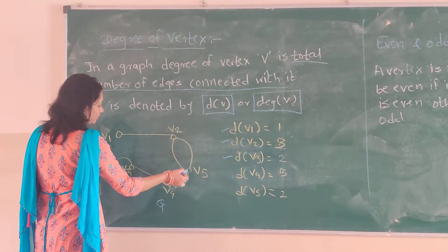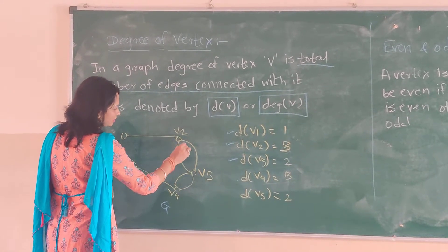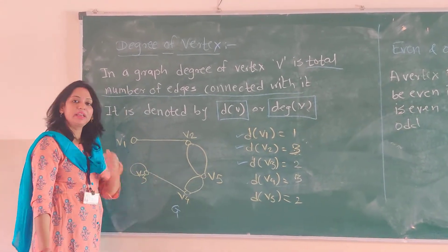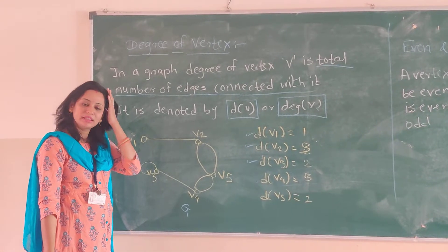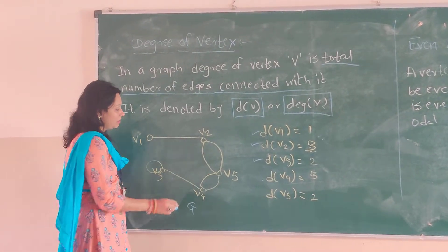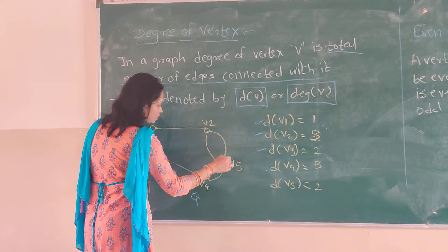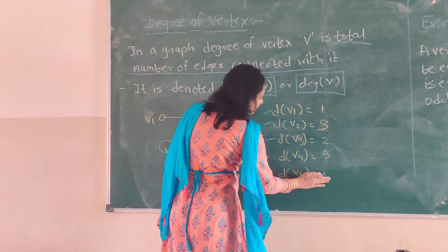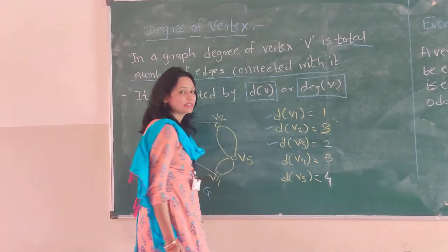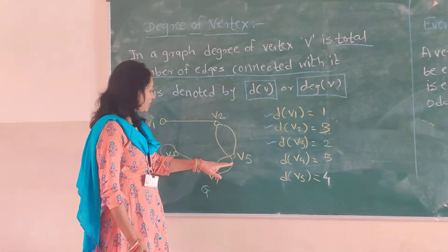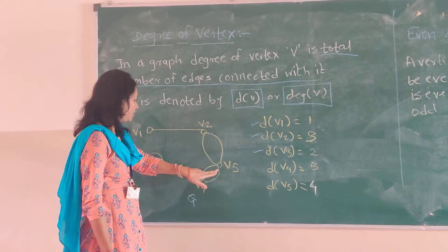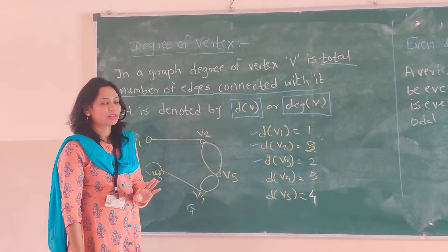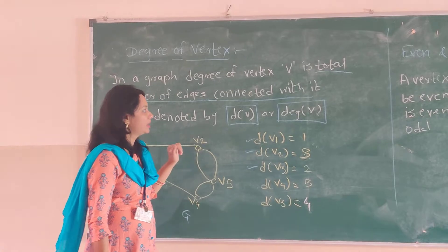And V5. 1, 2, and 3. Degree of V5 is 2. Is it true? No. Because 1, 2, 3, and 4 - four edges are connected. We have to consider all the edges, so the degree of V5 is 4. This is degree of vertex.